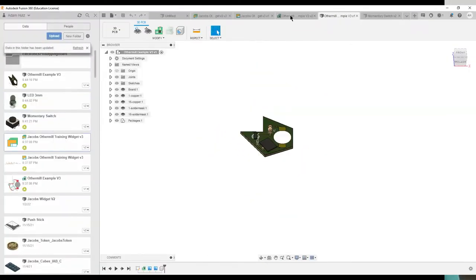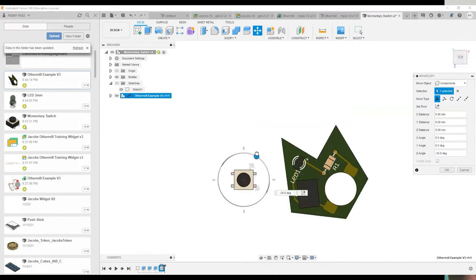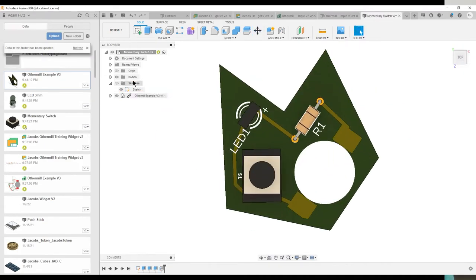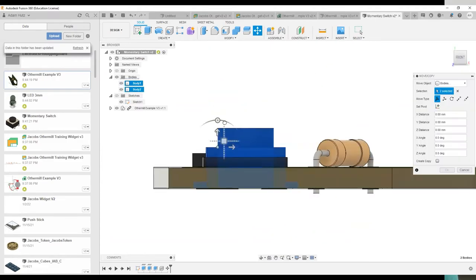After we complete our electronics design in Fusion, we can push it into a 3D model. This 3D model of our board makes it super easy to design the second demo part for this training, an enclosure for our PCB. We'll machine this out of quarter-inch Delrin. While we're here in Fusion, let's just go ahead and design that part.